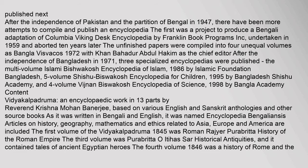After the independence of Pakistan and the partition of Bengal in 1947, there were more attempts to compile and publish encyclopedias. The first was a project to produce a Bengali adaptation of the Columbia Viking Desk Encyclopedia by Franklin Book Programs Inc., undertaken in 1959 and aborted ten years later. The unfinished papers were compiled into four unequal volumes as Bangla Visvakos (1972). After the independence of Bangladesh in 1971, three specialized encyclopedias were published: the multi-volume Islami Bishwakish (1986) by Islamic Foundation Bangladesh, the five-volume Shishu Bishwakash (1995) by Bangladesh Shishu Academy, and the four-volume Vijnan Biswakash (1998) by Bangla Academy.